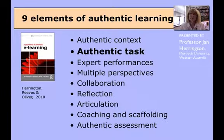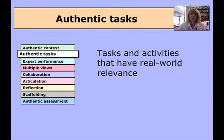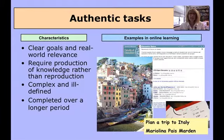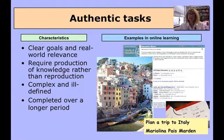I'm discussing the second element: authentic task. An authentic task in a learning environment must have real-world relevance. It would require production of knowledge rather than simple reproduction of knowledge. It would be a complex and ill-defined task and it would be completed over a longer period of time. By ill-defined, I don't mean badly defined or badly described — it means that it has to be broad enough for students to actually have to make decisions about how they will complete the task.